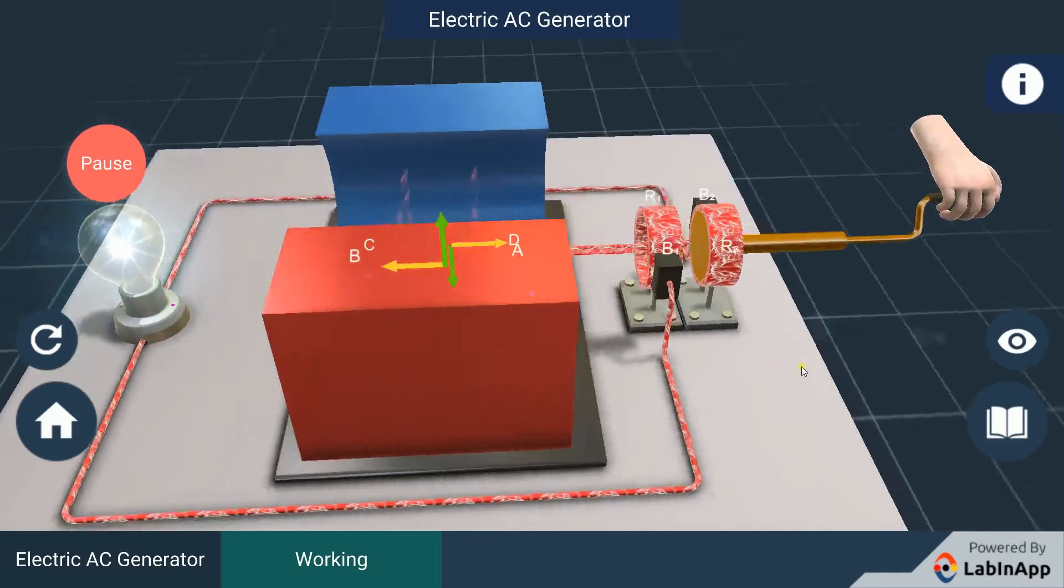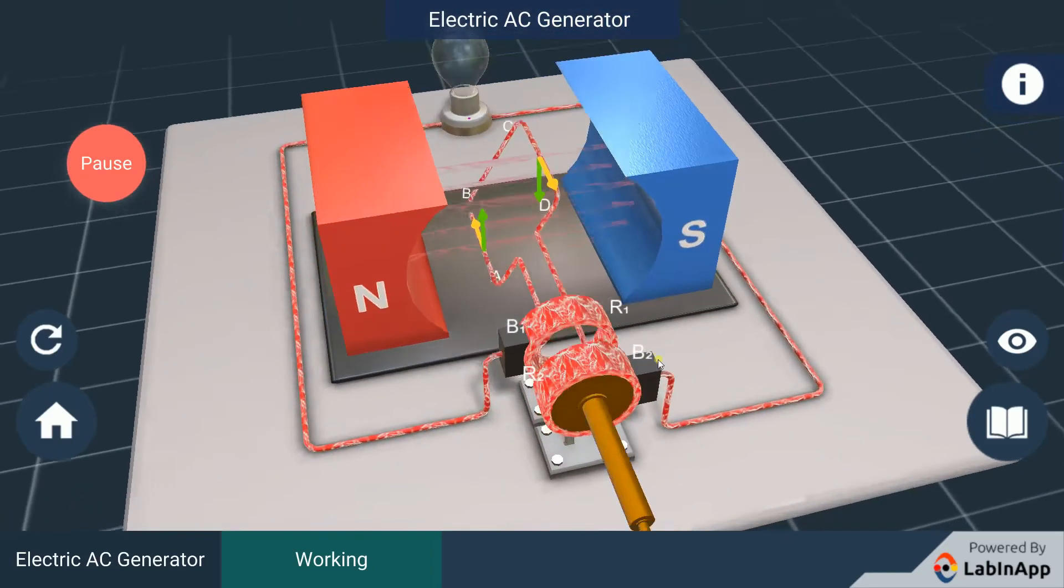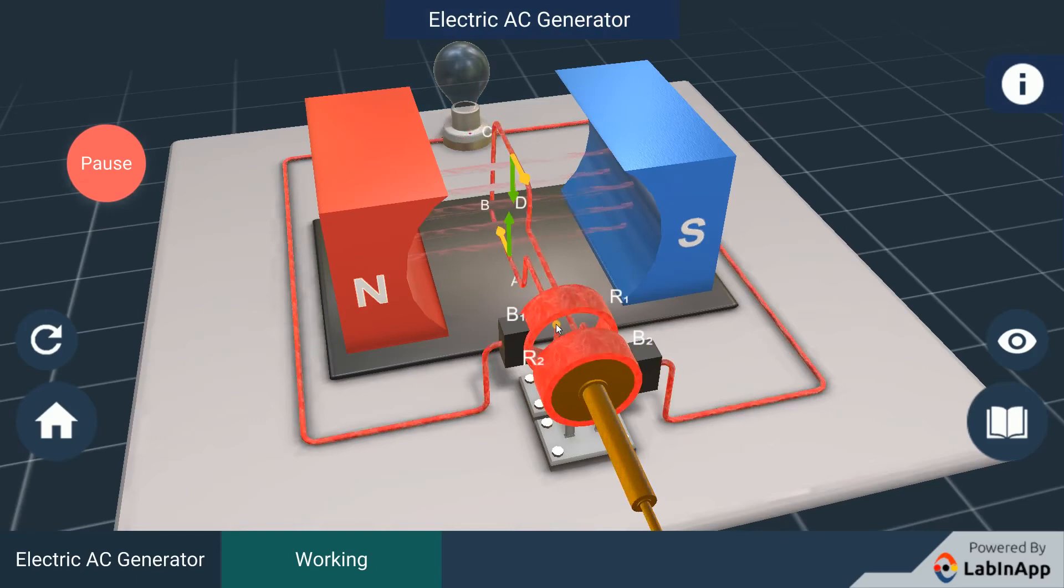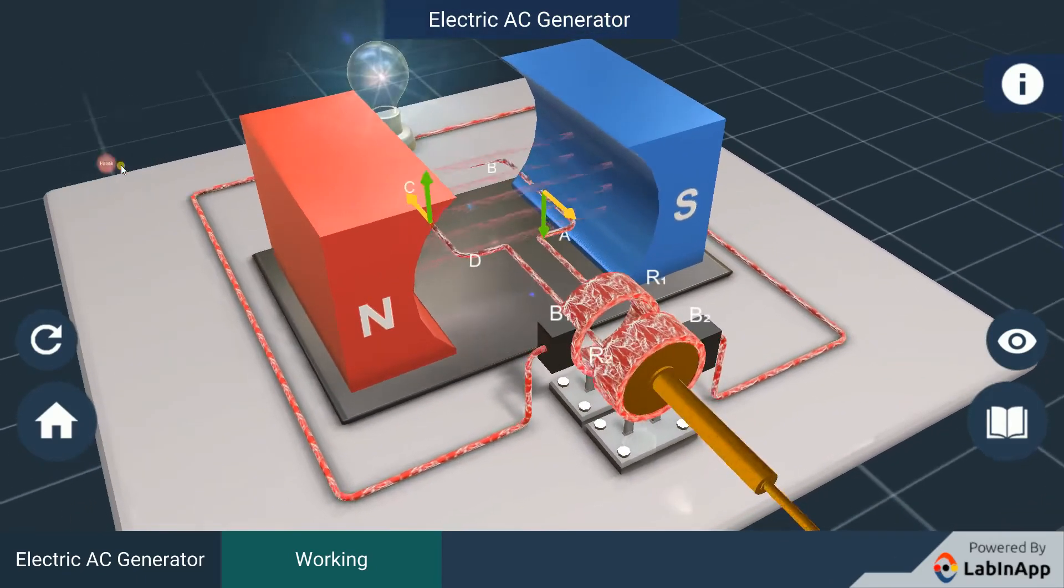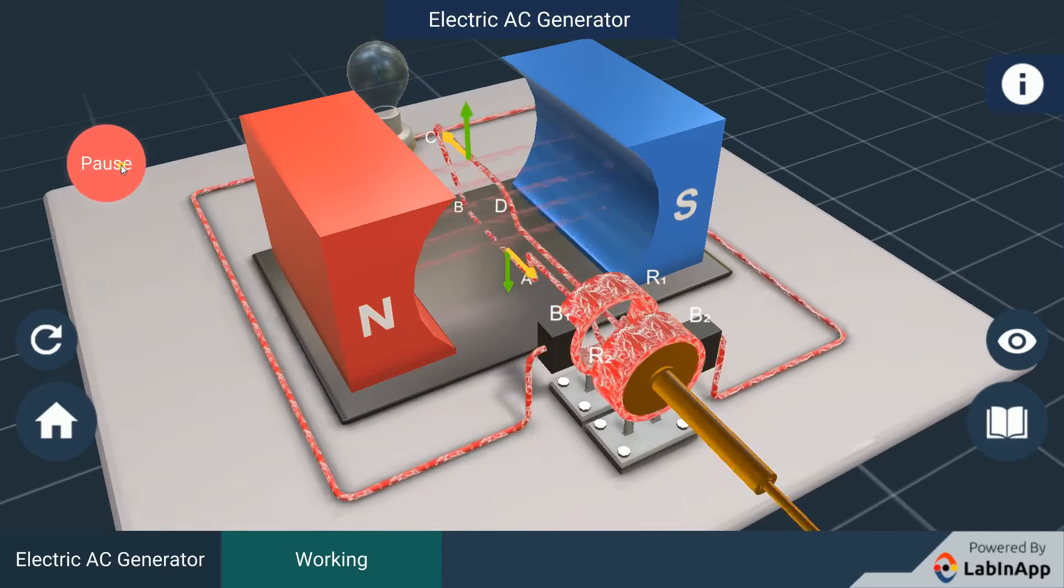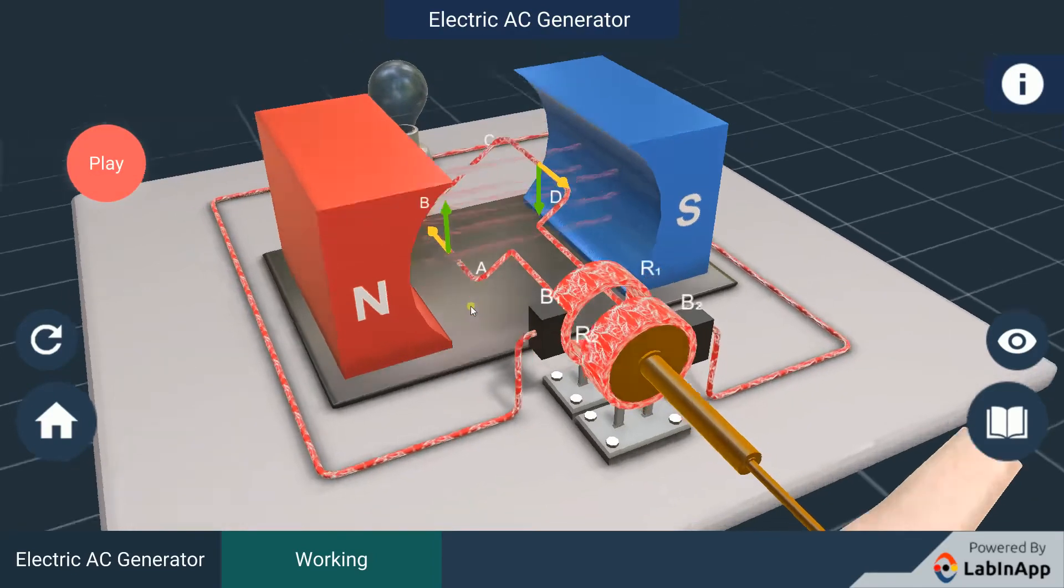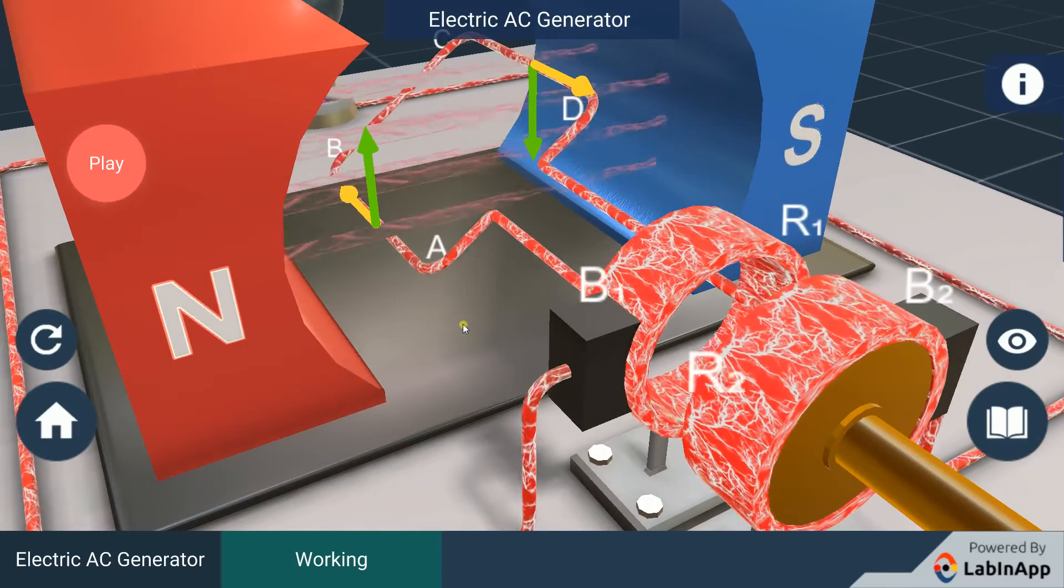Outer ends of the two brushes are connected to a bulb to show the flow of current in the given external circuit. When the axle attached to the two rings is rotated such that the arm AB moves up in the magnetic field, the induced current direction can be found by applying Fleming's right-hand rule.